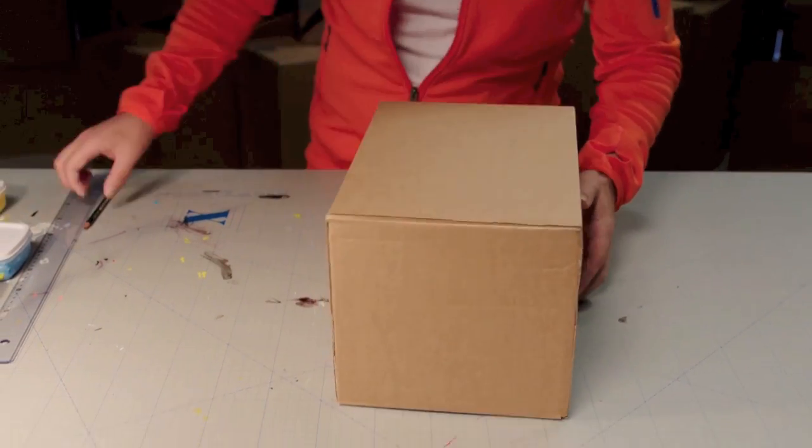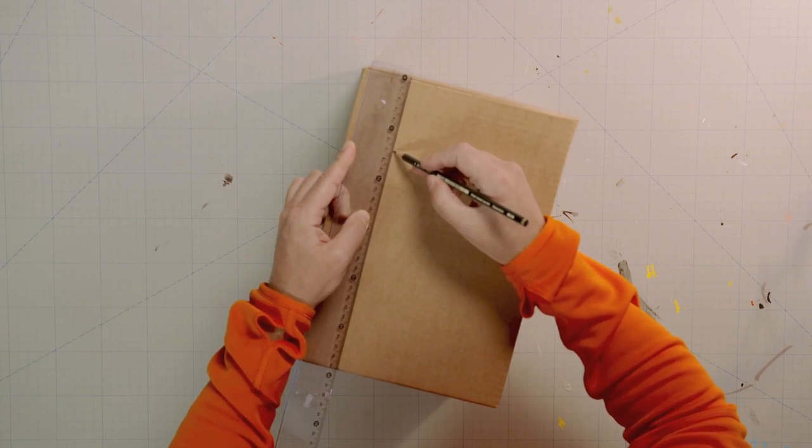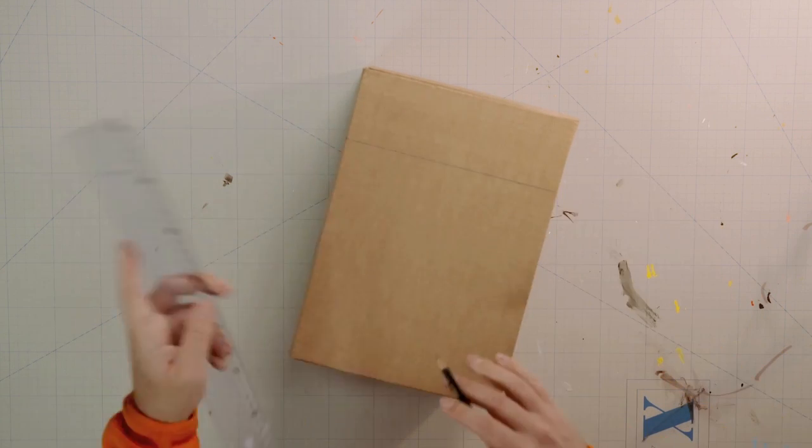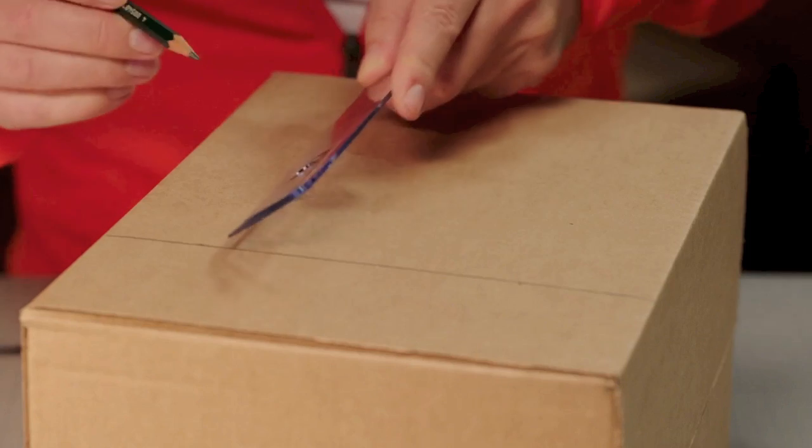We start by drawing some guidelines for some straight cuts. Grab a ruler and draw some straight lines running parallel to the top of the box. How big depends on the size of your box, as long as you get the overall shape of the lines right.